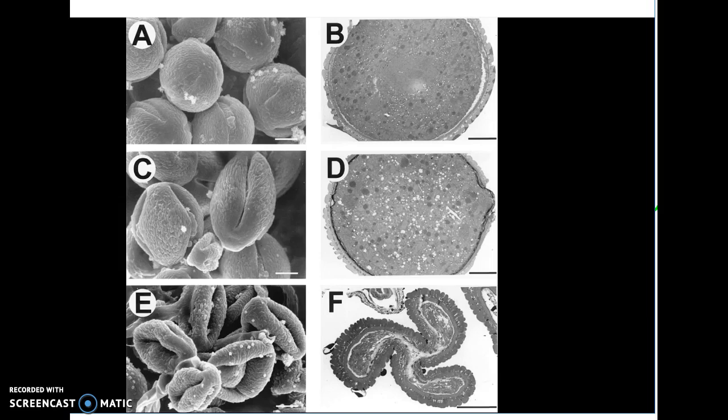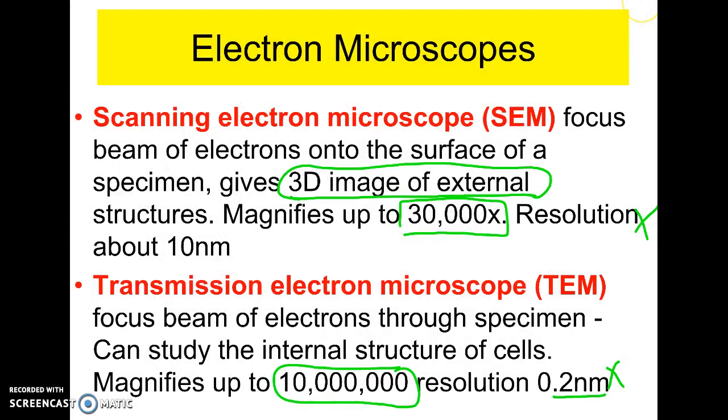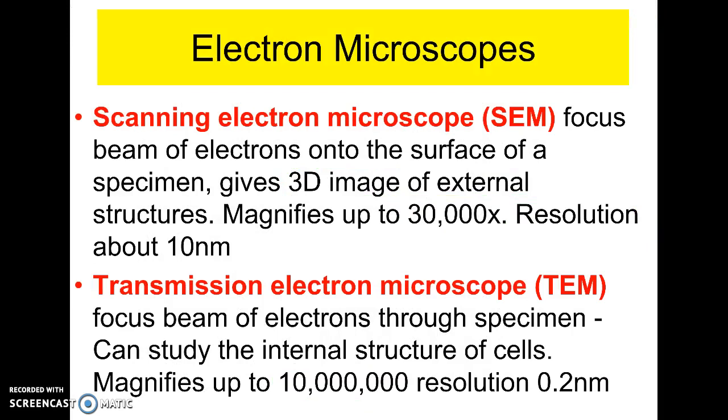So: scanning electron gives three-dimensional outer structures; transmission electron lets you see the inside. They use micro scalpels to slice specimens, then stain them with a metallic stain. There are micro scalpels that can slice things on a microscopic level, and micro pipettes so tiny you could actually insert a nucleus into a cell. This other picture also shows scanning electron microscopy — see how it's three-dimensional. This is cilia, the little hairs on certain microorganisms, which you also have in your air passages and intestine-like structures.